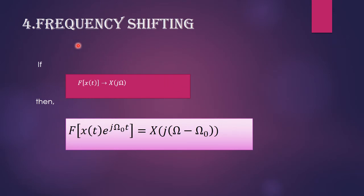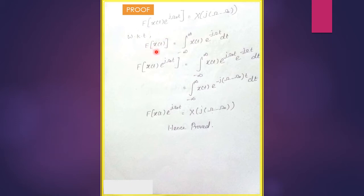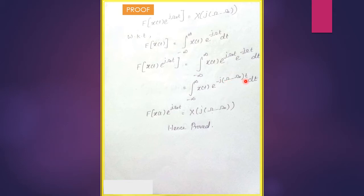The next property is frequency shifting, where shifting is done in the frequency domain. The Fourier transform of x(t)·e^{jω₀t} equals X(j(ω − ω₀)). The proof is straightforward: taking the Fourier transform of x(t)·e^{jω₀t} gives ∫x(t)·e^{jω₀t}·e^{-jωt} dt. Simplifying the exponential terms as e^{-j(ω − ω₀)t} gives X(j(ω − ω₀)). This property is proven.